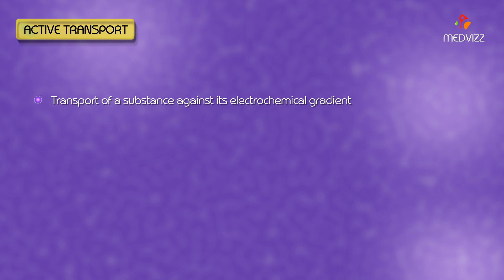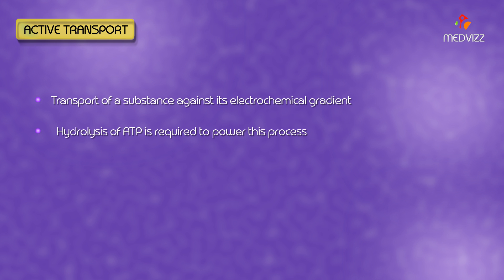Active Transport. It is the transport of a substance against its electrochemical gradient. Hydrolysis of ATP is required to power this process.